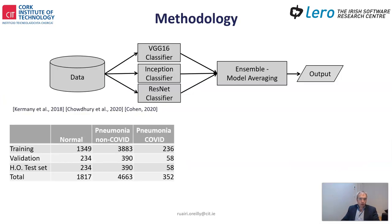The approach adopted is an ensemble-based approach built on top of three transfer learning models that take chest X-ray images as input and automatically classify them into one of three distinct classes: Normal, Pneumonia non-COVID, or Pneumonia COVID.